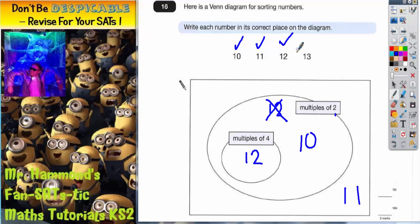Final one, the number 13. Well, 13 is not even, so it can't be a multiple of 2, therefore it can't be a multiple of 4, therefore it has to go outside, and outside the two ovals means somewhere inside this rectangle. And that's it, all four numbers sorted.